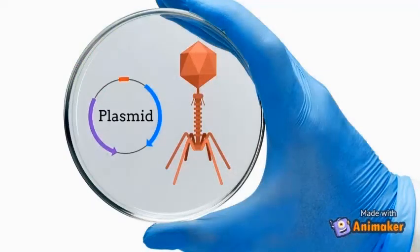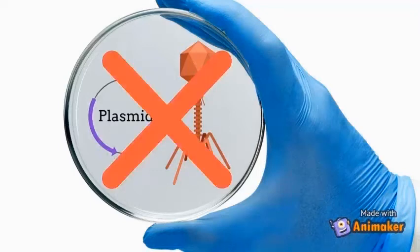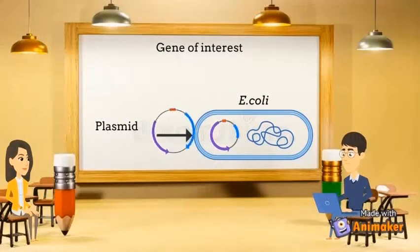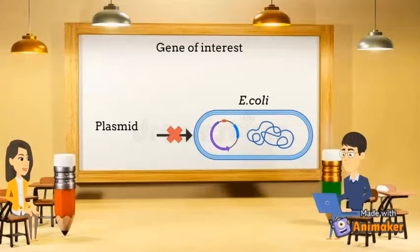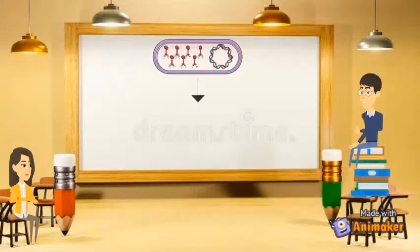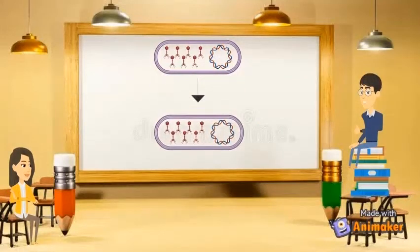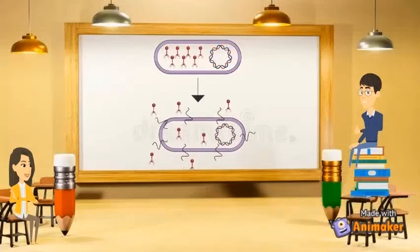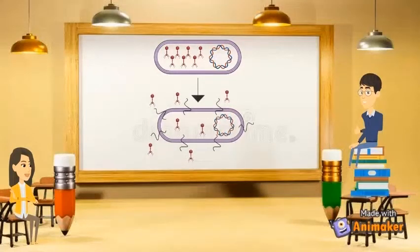The main reason for the development of the cosmid vector is to eliminate the disadvantages of plasmids and phage vectors. When a large DNA fragment is cloned into a plasmid, one problem faced is very low transformation efficiency into the bacterial host cells. Besides that, lysis of infected host cell culture can occur, which is a disadvantage of bacteriophage vectors.